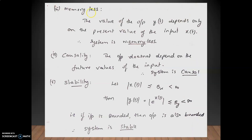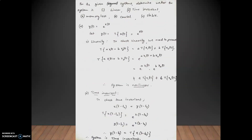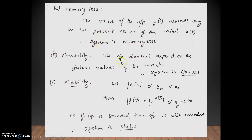The fourth property to verify is causality. For y(t) = e^x(t), the output always depends upon the present value of the input only. It does not depend on any future values of the input. Hence the system is causal. If the output depended on future input values, it would be non-causal.